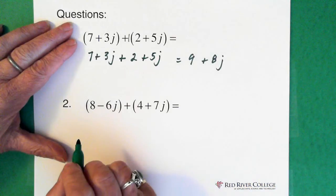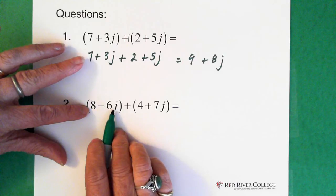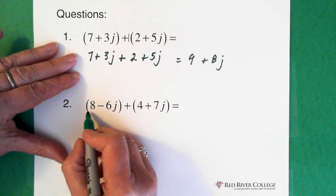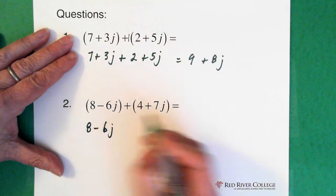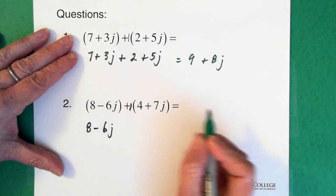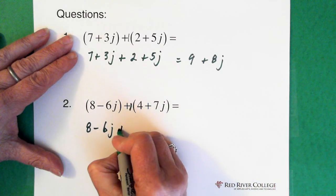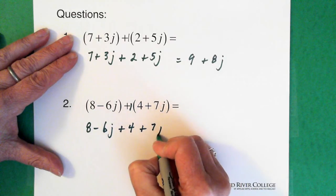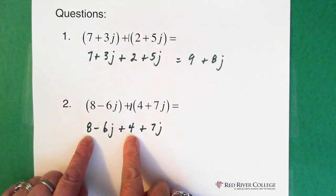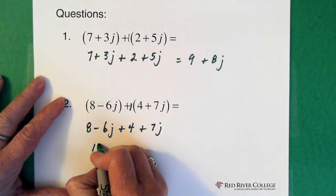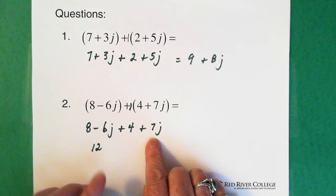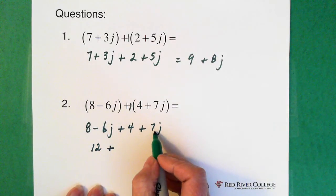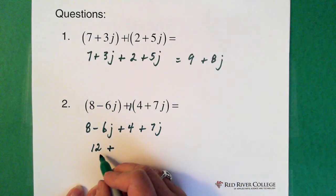Next question. We have a real minus imaginary, then real plus imaginary. We can drop the first bracket because we don't have a negative in front of that sign. So we have 8 minus 6j. And there's a plus 1 in front of the second bracket, so we can drop that bracket too, giving us plus 4 plus 7j. We add our real numbers, 8 and 4, which gives us 12. We add our imaginary numbers: minus 6 added to 7 gives us plus 1j, which is essentially j. So this becomes 12 plus j.